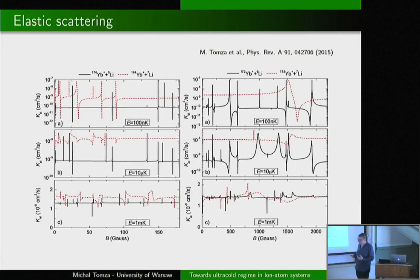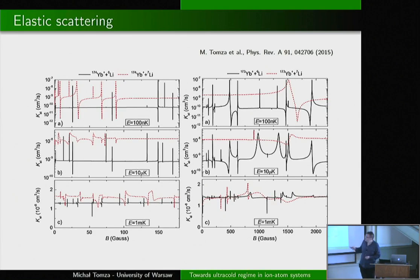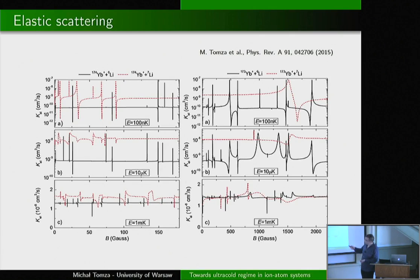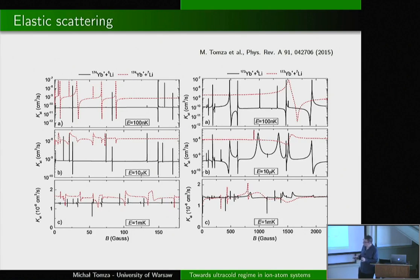Looking at the impact of the magnetic field, we want control of ion-atom scattering length via Feshbach resonances. Example plots for different isotopic mixtures of ytterbium ion and lithium atoms at several temperatures show that at 100 nanokelvin, resonances are very pronounced. At 10 microkelvin, resonances are much less pronounced (note completely different scales). At 1 millikelvin, resonances are completely negligible, especially after thermal averaging which completely washes them out.